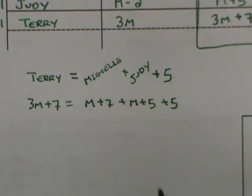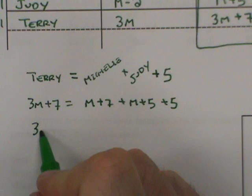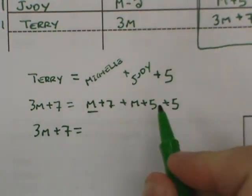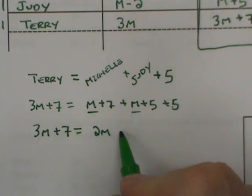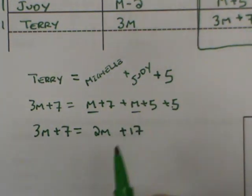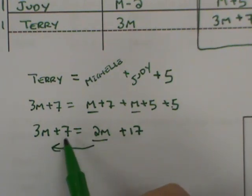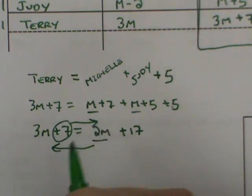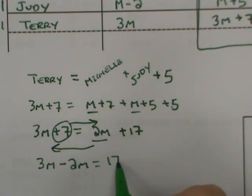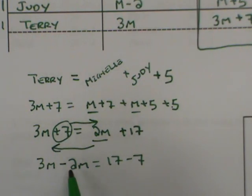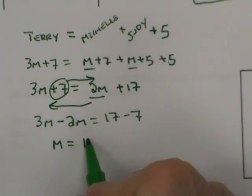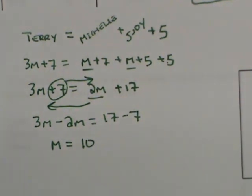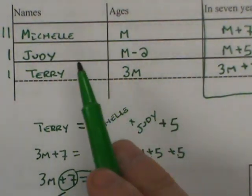We'll solve this simple equation. Three M plus seven equals M plus M, which is two M, and five plus five plus seven equals seventeen. Moving the two M to the left and the seven to the right: three M minus two M equals seventeen minus seven. Three M minus two M is M, and seventeen minus seven is ten. So M equals ten.